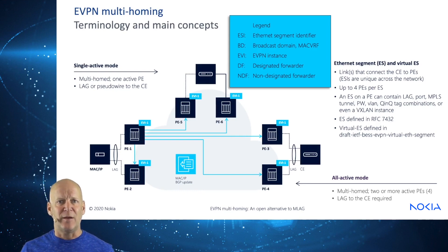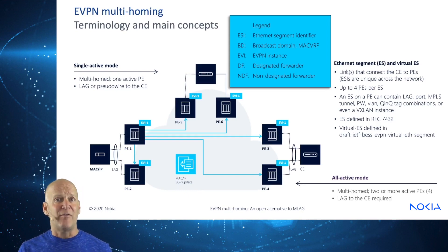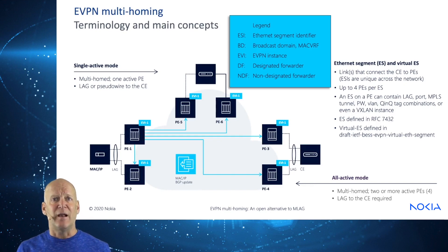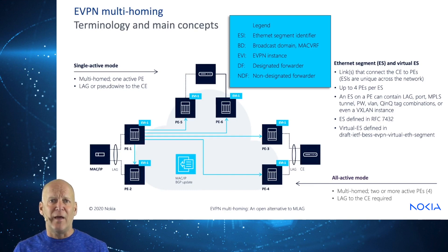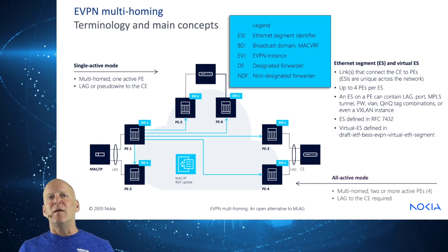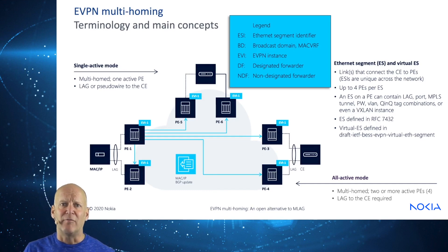The Ethernet segment and virtual Ethernet segment are the links that connect the CE to the PE, and the Ethernet segment identifier is unique across the network. It can have up to four PEs per ES, and an ES on a PE can contain a LAG port, MPLS tunnel, pseudowire, VLAN, Q-in-Q tag combinations, or even a VXLAN instance. The ESI is defined in RFC 7432, BGP MPLS-based Ethernet VPN.